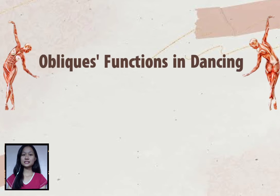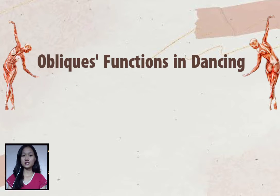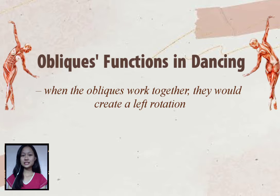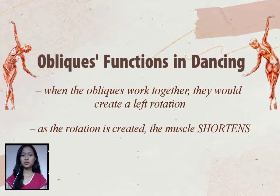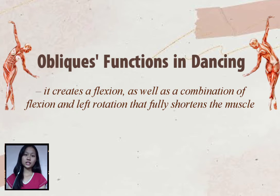What does the oblique function in dancing? When the internal and external oblique work together, they create a left rotation. As the rotation is created, the muscle shortens. It can also create a flexion and a combination of flexion and left rotation that fully shortens the muscle.